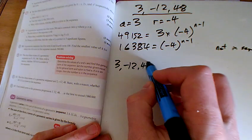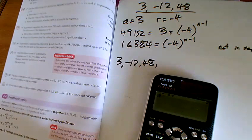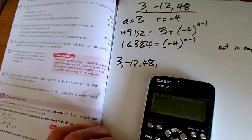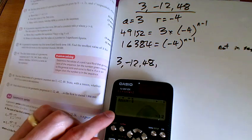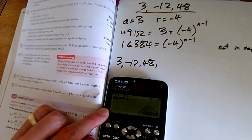3, minus 12, 48. And like we did in one of the earlier questions, let's just put that in. 3 times by minus 4. And we get the next sequence: minus 12, 48, minus 192. And we keep going and look,